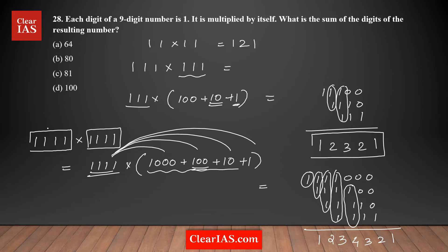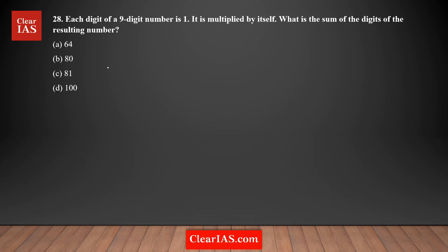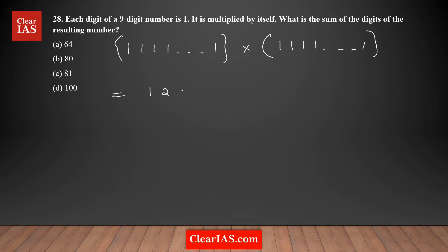You can see the pattern now: when multiplying a repunit with n ones, you get 1, 2, 3, ... n, ... 3, 2, 1. For three ones: 12321; for four ones: 1234321. Applying this pattern to the nine-digit case — nine ones times nine ones — the product will be 123456789987654321, then decreasing 8, 7, 6 down to 1.